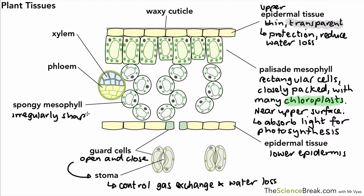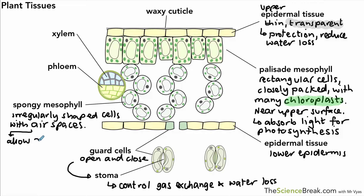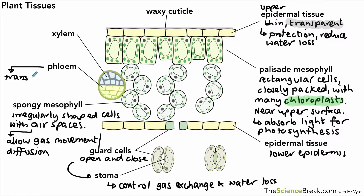The spongy mesophyll tissue is made of cells that are more irregularly shaped compared to the palisade mesophyll cells, and they are loosely packed into the middle area of the leaf. This means there are plenty of air spaces, which is important because it allows gases — carbon dioxide and oxygen — to move or diffuse quickly and easily into the cells or out of the leaf.